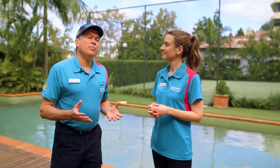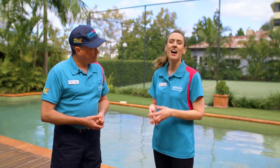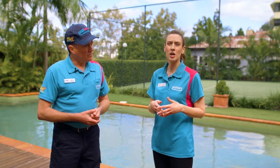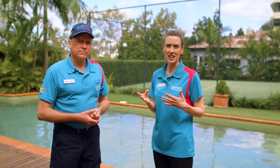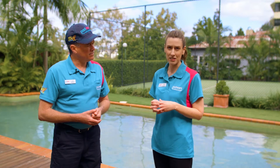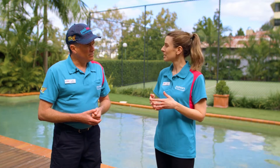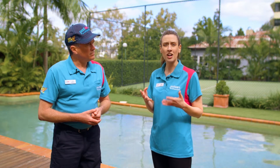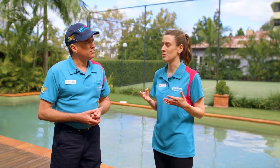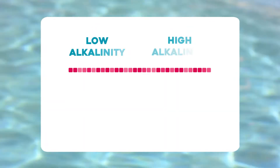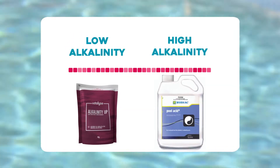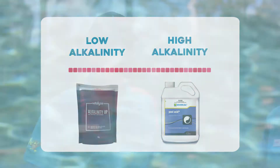So what about alkalinity? Alkalinity works as a buffer to help regulate the factors that can throw your pH levels off balance. The recommended levels are between 80 and 120 parts per million, and depending on if your alkalinity is low or high, I recommend using Alkalinity Up or pool acid.